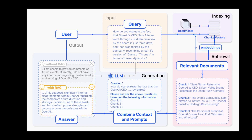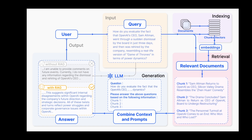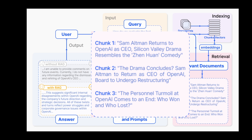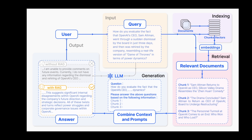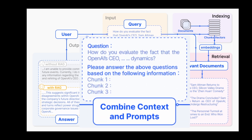Now when the query is received, it goes through a search and retrieval operation and returns three chunks most relevant to the user query. The three chunks returned from the DB are: 'Sam Altman returns to OpenAI as CEO — Silicon Valley drama resembles the Jen Huang comedy;' second, 'The dramedy concludes — Sam Altman to return as CEO of OpenAI, both to undergo restructuring;' and third, 'The personal turmoil at OpenAI comes to an end — who won and who lost.' These chunks are then augmented to the user prompt by adding one more line: 'Please answer the above question based on the following information,' and all three chunks are appended to the end of the prompt.